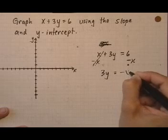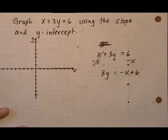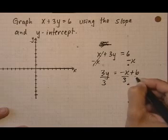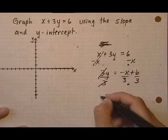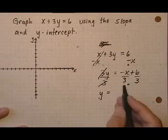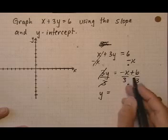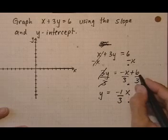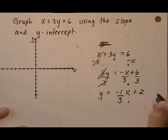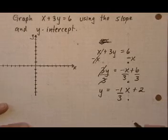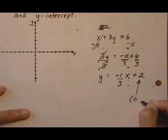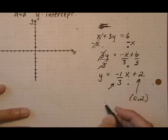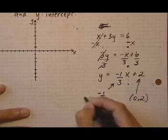3y equals negative x plus 6. Divide everybody by 3, each term. That's gone. I get y equals negative, if there is nothing next to the x you've got a 1. So minus 1 third x plus 6 over 3 is 2. So right away after I've done that I know my y-intercept is 0,2, and I know my slope is minus 1 third.